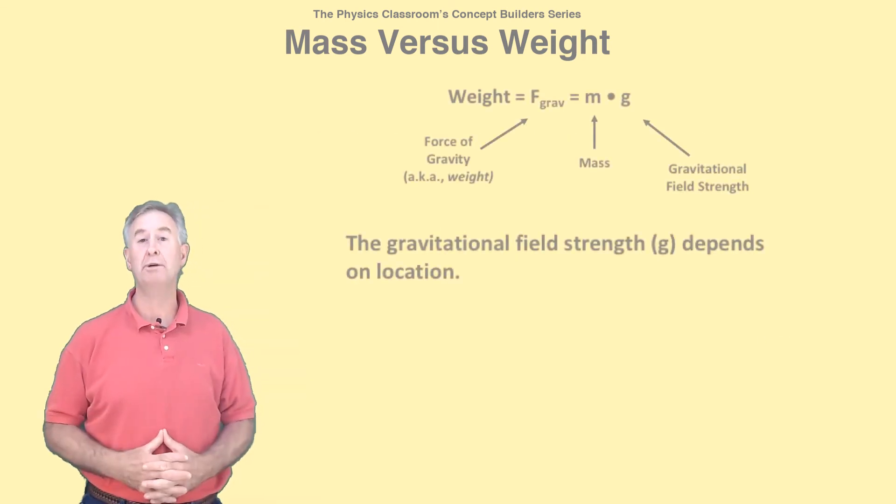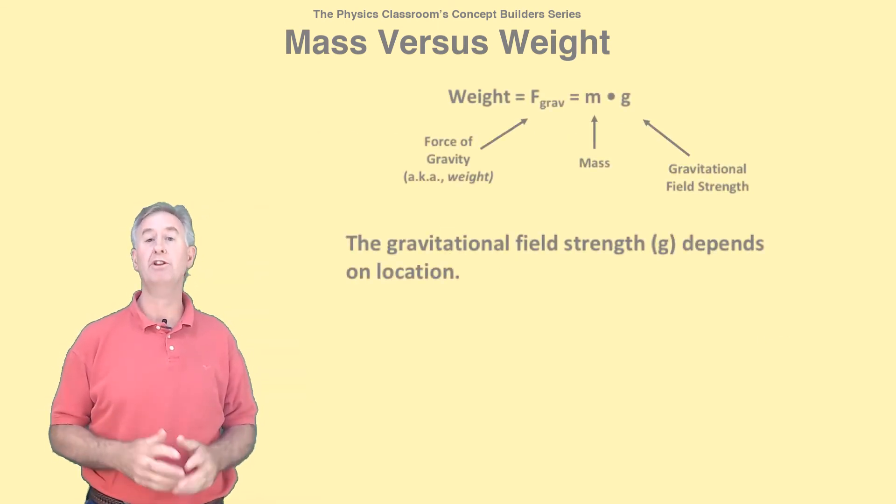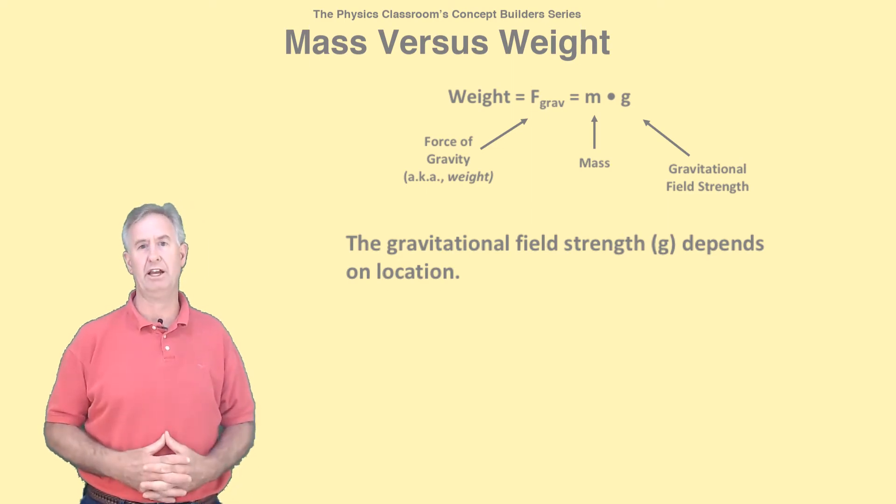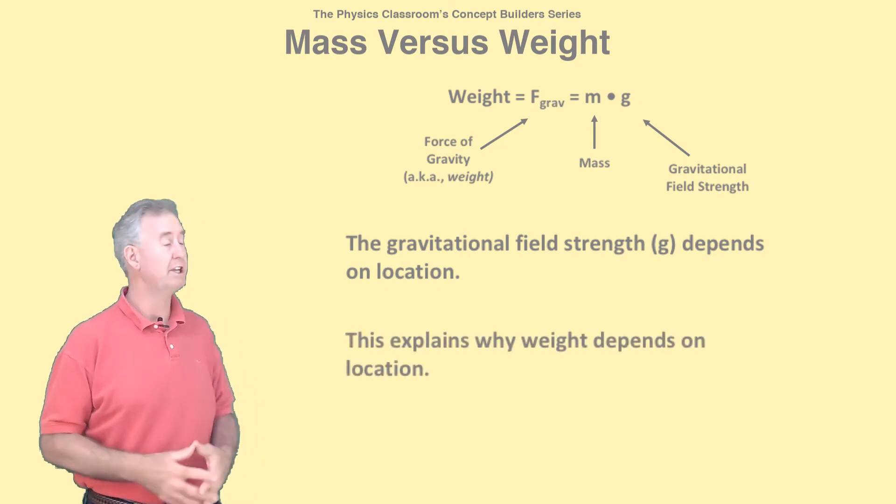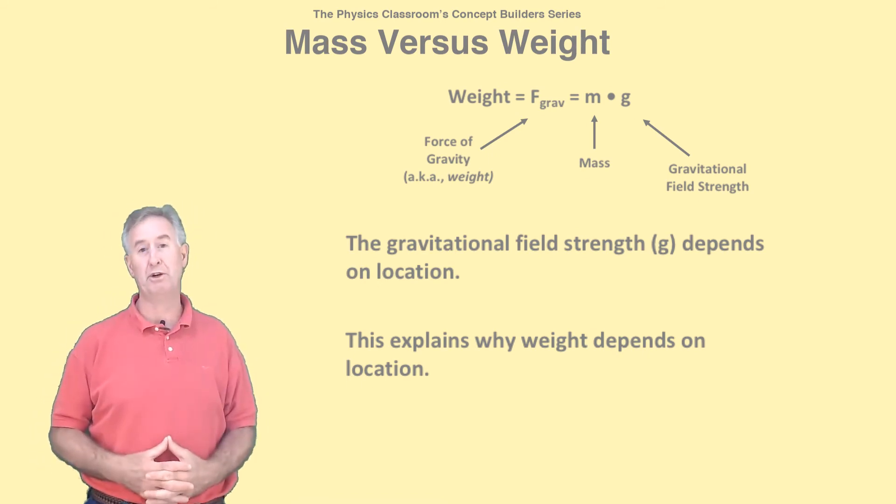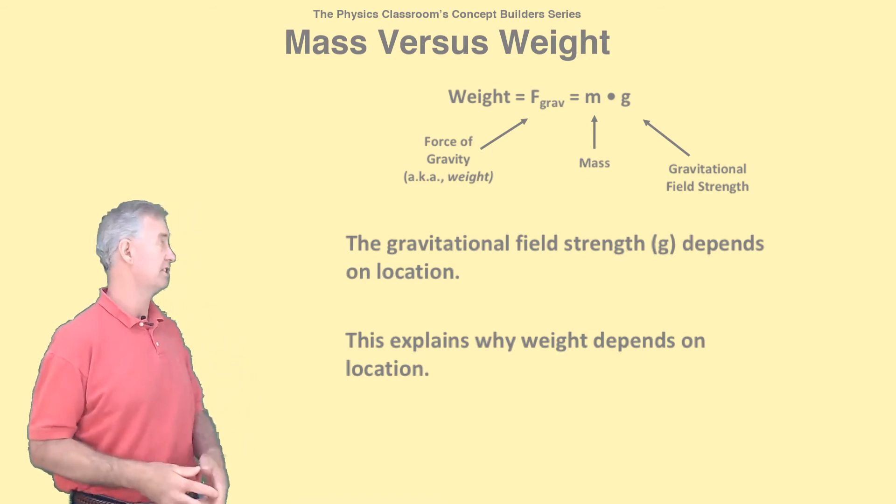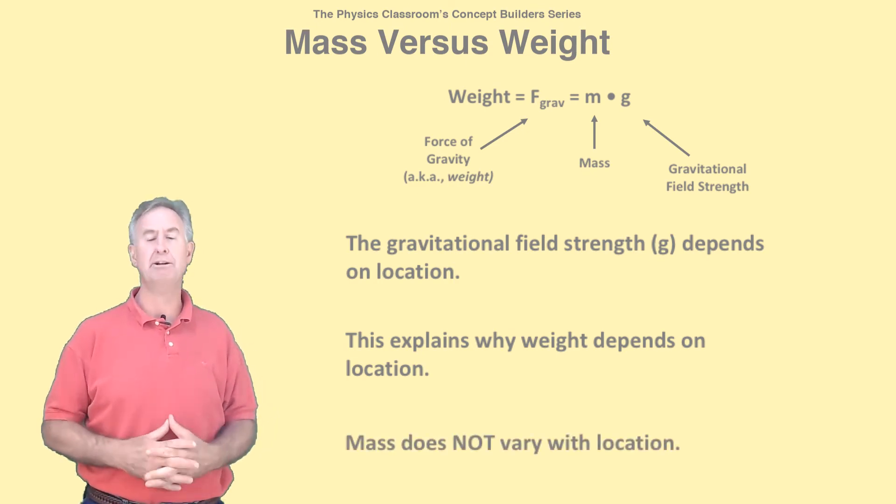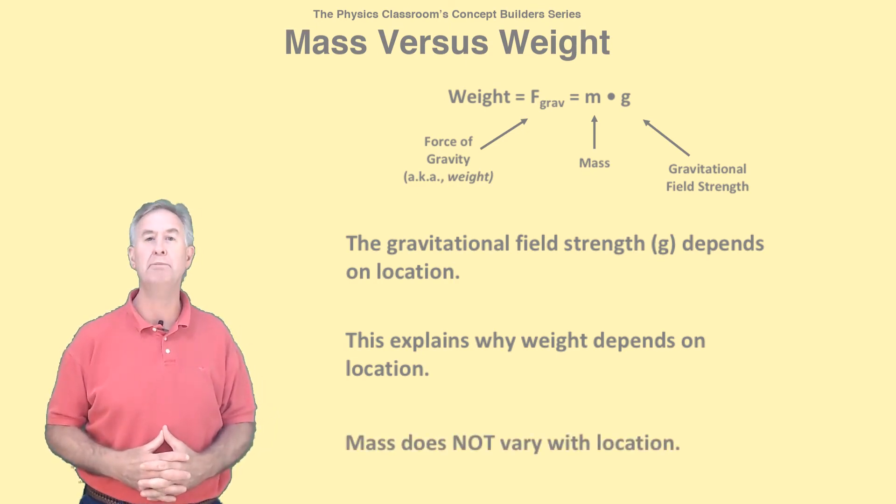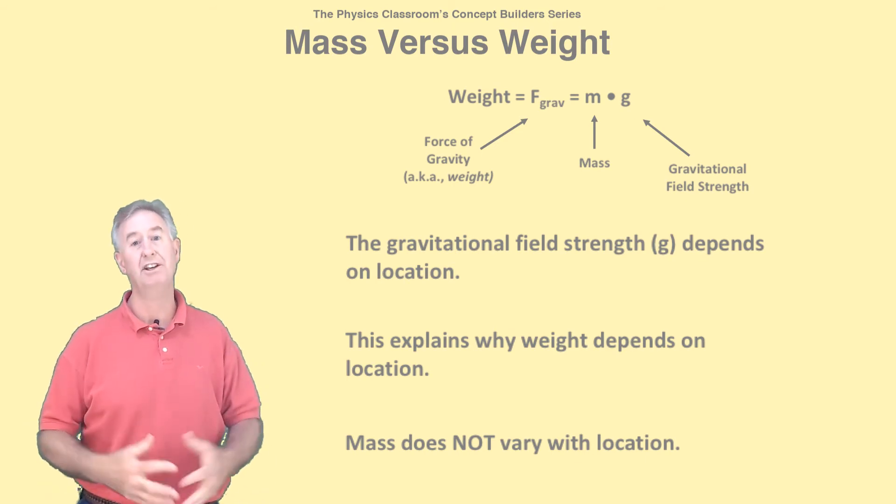The value of g depends on the gravitational environment of the location where the object is at. Because g depends on location, the force of gravity or weight also depends on location. The real constant in the equation could be thought of as mass. Mass does not depend on location, but is only dependent on the amount of stuff in the object.